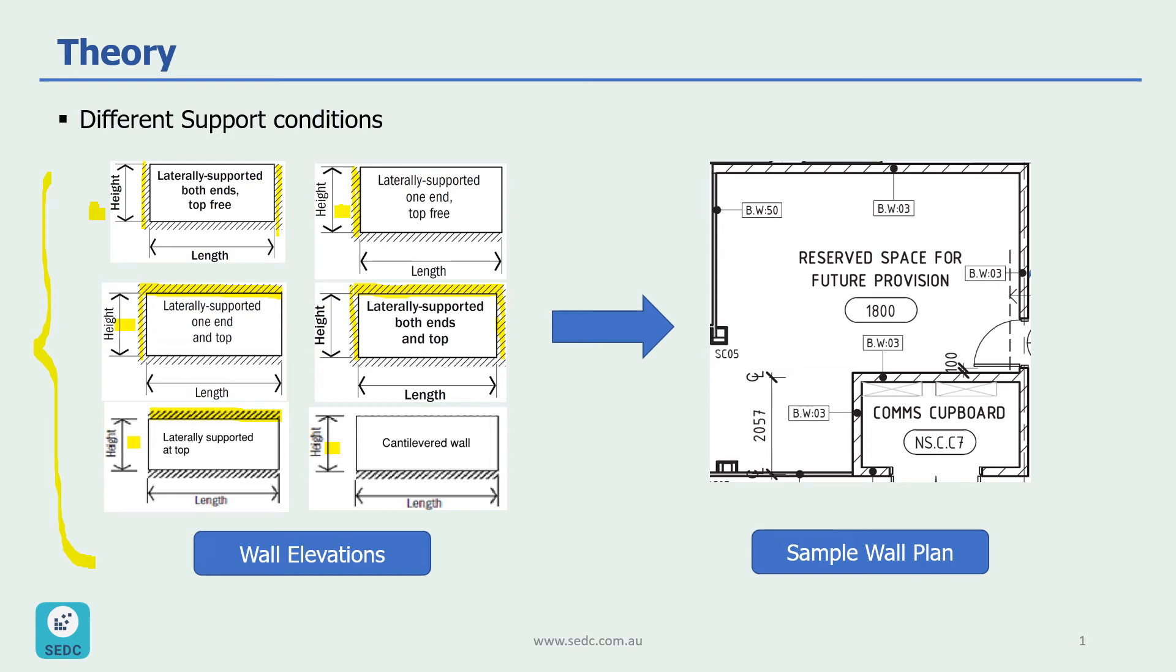So to understand this better, if we look at the wall plan, for example, if we look at this wall in here, as you can see at the right side, we have this wall, which is going to be considered as a support for this end of the wall. So it means at this end, we have one vertical edge support.